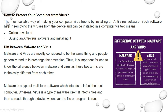Malware is defined as software specifically designed to disturb, damage, or gain unauthorized access to a computer system. Whereas a virus is a piece of code which is capable of copying itself and typically has a detrimental effect such as corrupting the system or destroying data. So here you got the idea about virus, types of viruses, how the virus affects the computer, how to protect it, and what is the difference between malware and virus.